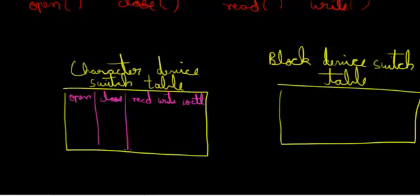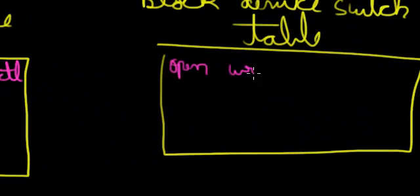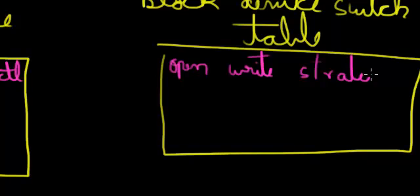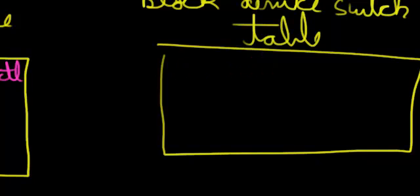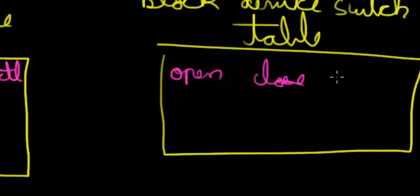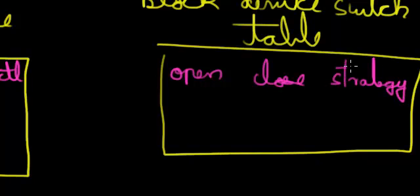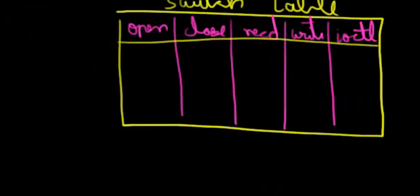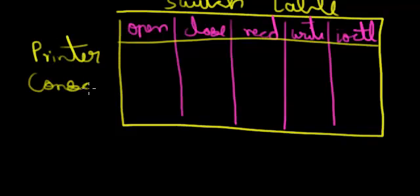You don't have read and write with block devices because those operations are handled with the strategy system call, which makes use of the buffer cache. So for block devices you just have open, close, and strategy. And for each device — printer, console, and so on — you have a separate entry.